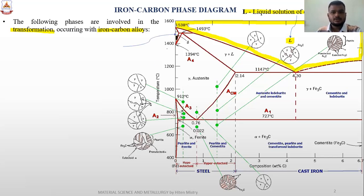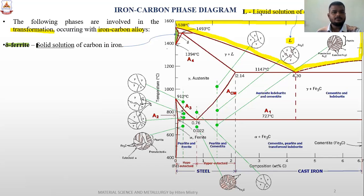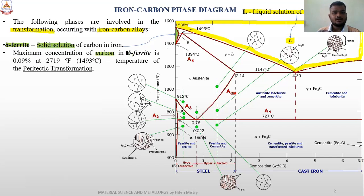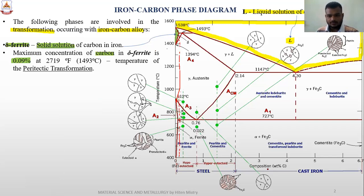The second region is the Delta region. With a color change, the green section indicates the Delta section, which is basically known as Delta Ferrite. It is a solid solution of carbon atoms. Why solid solution? Because now we are letting the solid solidify, and the temperature is decreasing from 1600 degrees to 1400 degrees. There is an initiation of solidification happening at that point. It is a solid solution of carbon in iron. The maximum concentration of carbon in Delta Ferrite is 0.09%.